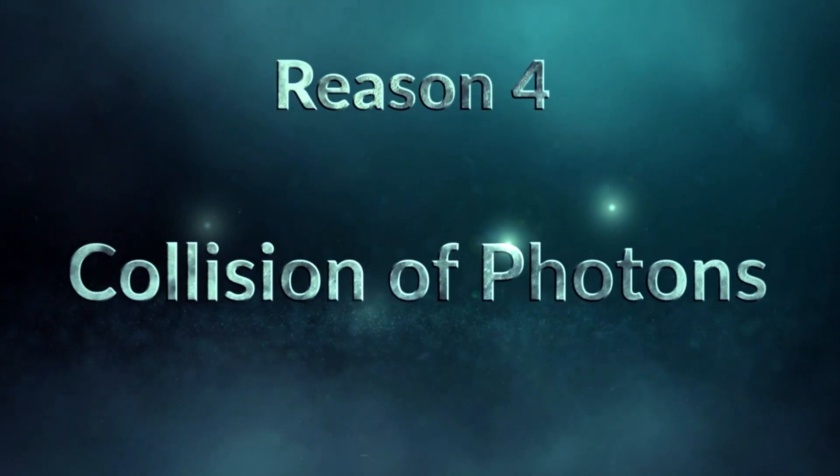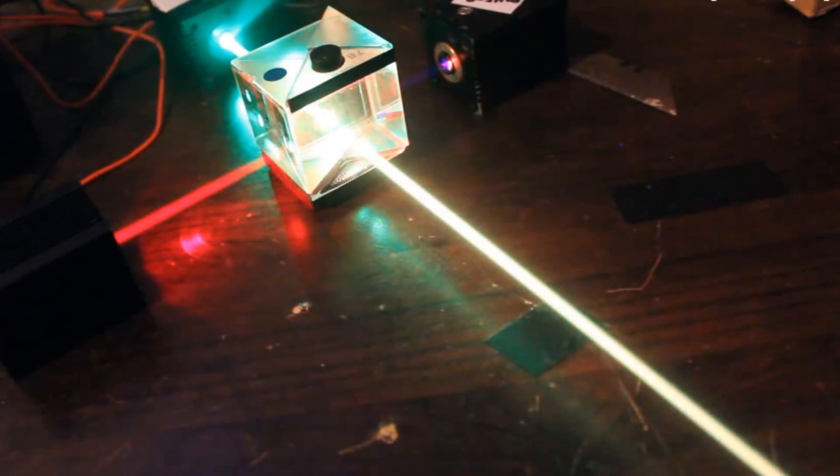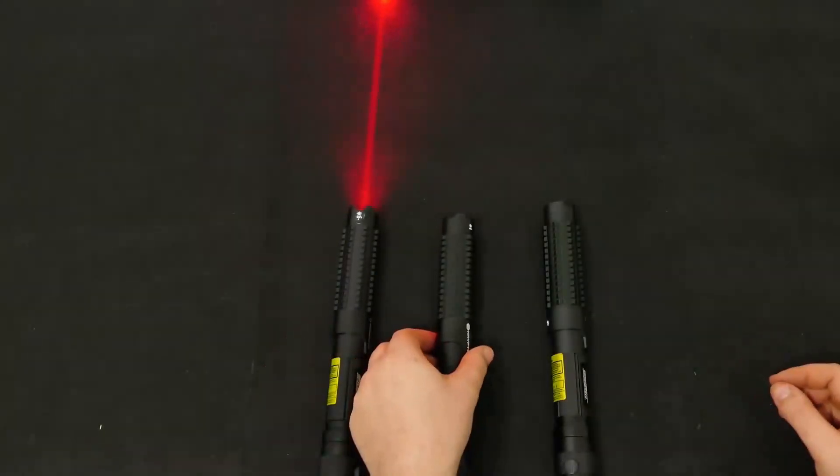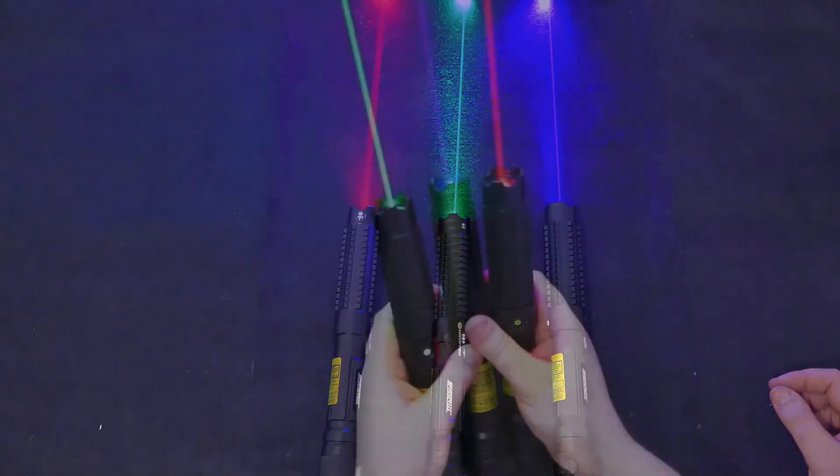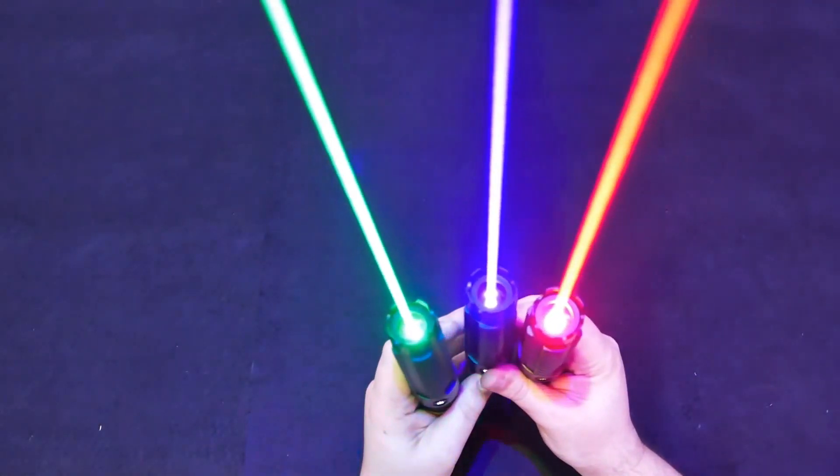Reason 4: Collision of photons. Now, imagine an experiment in which two spectral color sources are placed vertically in perpendicular directions. One is red and the other is green. We all know that at the intersection of these two spectrums, the color of them turns yellow.